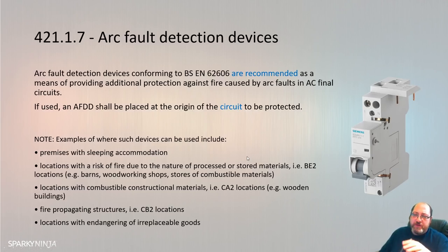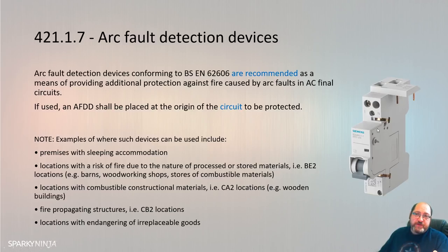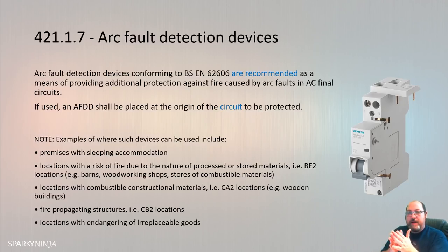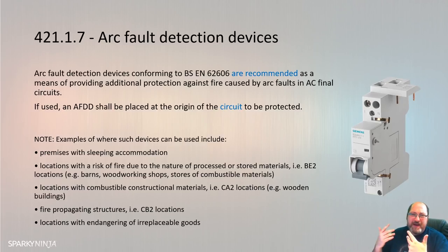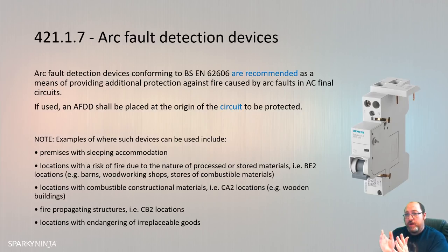AFDDs are considered a device that goes beyond current MCBs and RCDs. MCBs work on overcurrent and overload protection; RCDs work on imbalance of current to earth. AFDDs monitor the waveform and identify distortions that indicate arcing events. They work with parallel arcs — an arc between one conductor to another within a single flex, such as line to earth or line to neutral — but they'll also work with series arcs, which are dictated by the load because you need power flowing to create them.